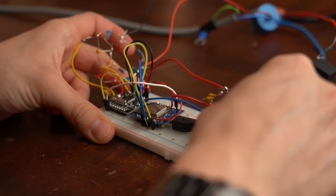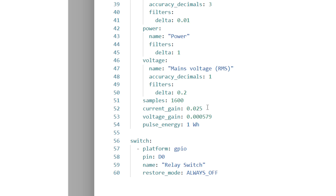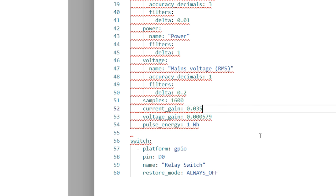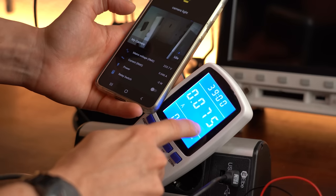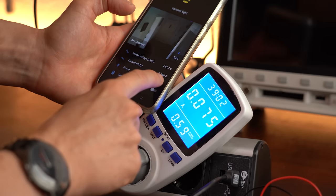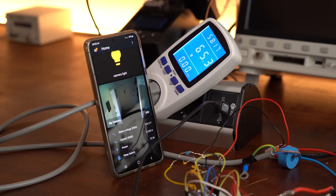With this step complete all that was left to do was programming the ESP through home assistant and then fine adjusting the voltage and current gain values in the code by simply comparing what values a cheap power meter spits out and what the ESP spits out. And just like that the power measuring functionality seems to work.